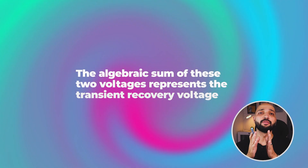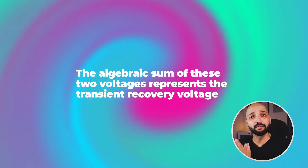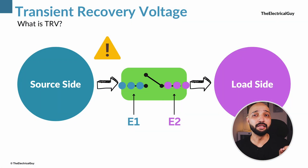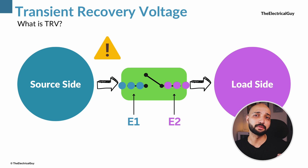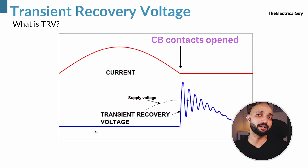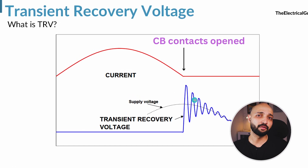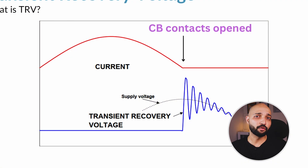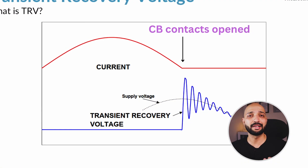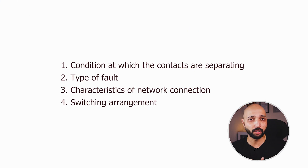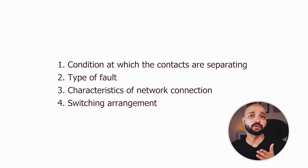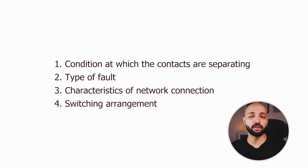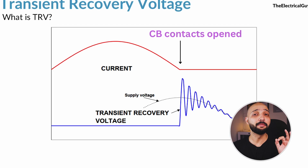The algebraic sum of these two voltages E1 and E2 represents the transient recovery voltage, normally referred to as TRV. This transient recovery voltage is a high frequency voltage that can be several times higher than the normal system voltage. The waveform of TRV typically has several oscillations and can last for several microseconds. TRV depends upon factors like the conditions at which the contacts are separating during a fault, the type of fault, and the characteristics of the network connection and switching arrangement used.